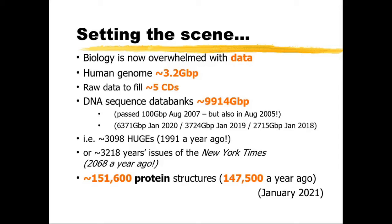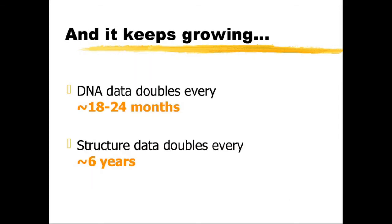Yet another way to look at the amount of data: it's about 3,200 years' issues of the New York Times, and that was just over 2,000 a year ago. In addition, we have a lot of protein structure data — about 151,600 protein structures in the databases at the moment, compared to about 147,500 a year ago, so that is not increasing at the same sort of rate. From this we can see that DNA data doubles roughly every 18 to 24 months, while structure data doubles around every six years or so.